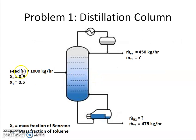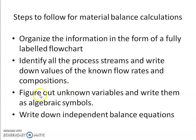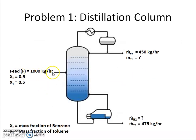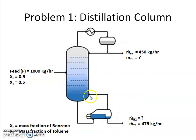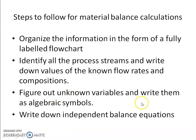I have identified all the process streams — the incoming stream and the outgoing streams. The next step is to figure out the unknown variables and identify the known variables, such as known flow rates and compositions. Whatever is known, I've written it down. Whatever is unknown, I assign a symbol. The toluene flow rate in the distillate is m-dot-T1, and the benzene in the bottom product is m-dot-B2.